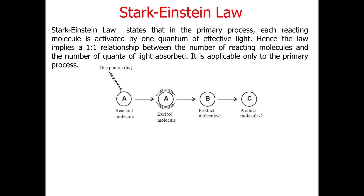From the excited state A*, it can undergo the product. When it undergoes the product, there may be the presence of an intermediate state. Either from A* it can directly form B — if it is a single-step reaction. Or, if it is a multi-step reaction, then different kinds of intermediate states are possible, meaning transitions from B to C states are possible. This is the main fundamental aspect of the Stark-Einstein law.